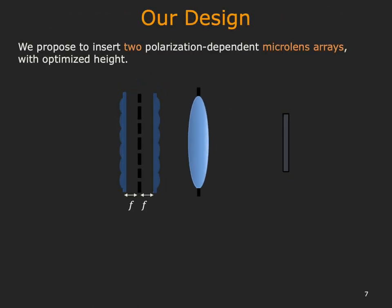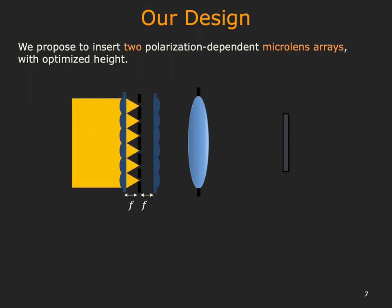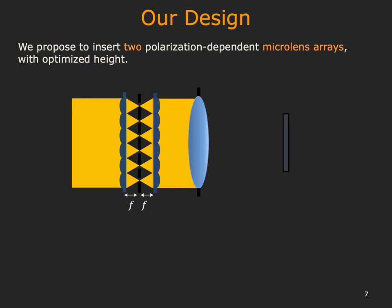We propose to insert two polarization-dependent microlens arrays with optimized heights. Both microlens arrays have the same focal length f, and the display is one f away from both face masks. The incident wavefront is first concentrated by the first microlens array. Due to the thin waist of the concentrated wavefront, it passes through the display openings, and the second microlens array then reverts this effect. Within some limits, this effectively renders the display transparent, increases the light transmission rate, and shapes the wavefront that reaches the camera main lens to a better condition.